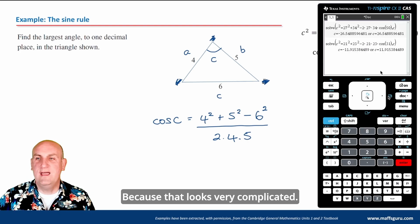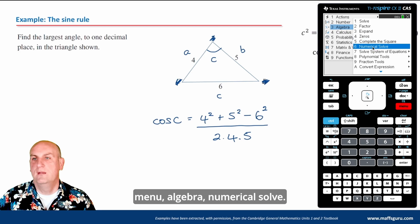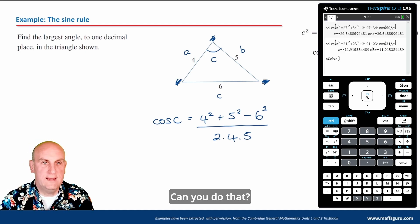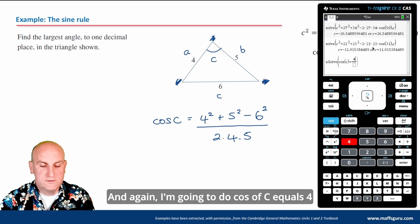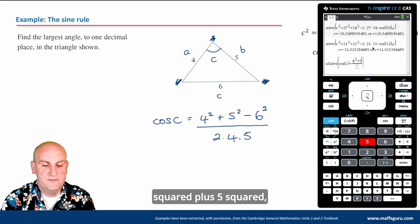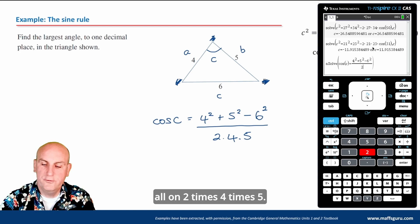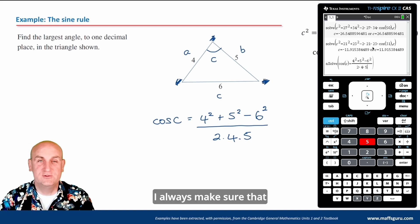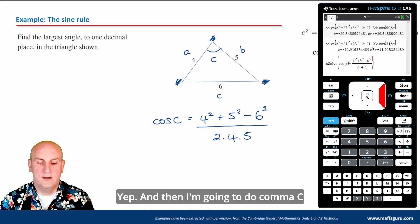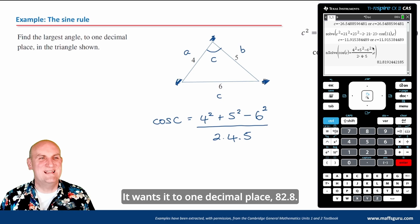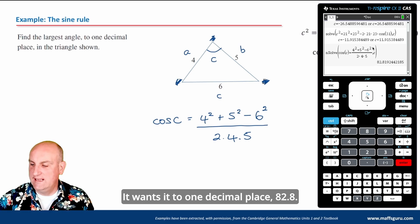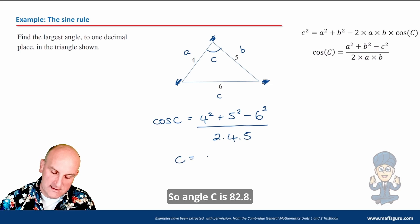Using menu, algebra, numerical solve: cos(c) equals (4 squared plus 5 squared minus 6 squared) divided by (2 times 4 times 5), comma c. Checking the typed expression looks right, then hit enter. The result is 82.8 degrees to one decimal place. We must write degrees because it's an angle. The trick to these questions is labeling the triangle properly.